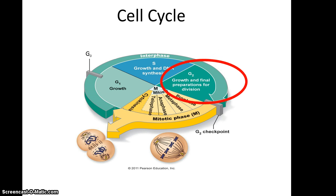The third phase is G2, where the cell undergoes even more growth, because you need to be rather large if you're going to divide in half and form two new functional cells. G1, S, and G2 in total are often referred to as interphase.